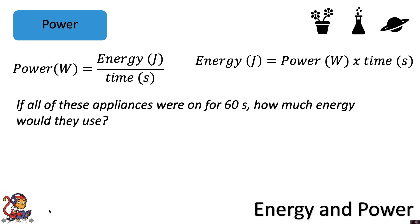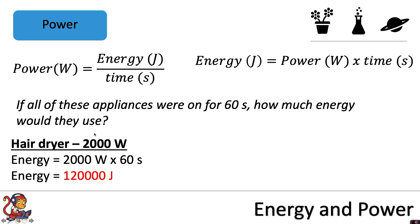For the hairdryer, the power rating was 2000 watts. To calculate the energy transferred by the hairdryer in 60 seconds, we would do 2000 watts multiplied by 60 seconds, which gives us an answer of 120,000 joules of energy.